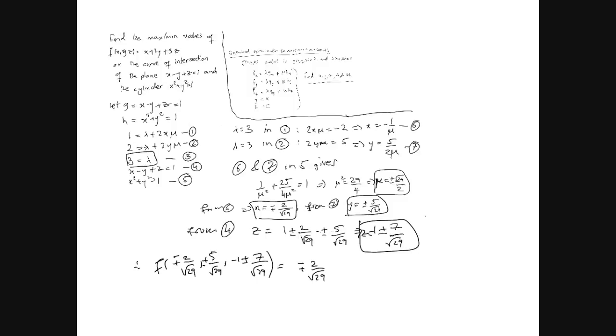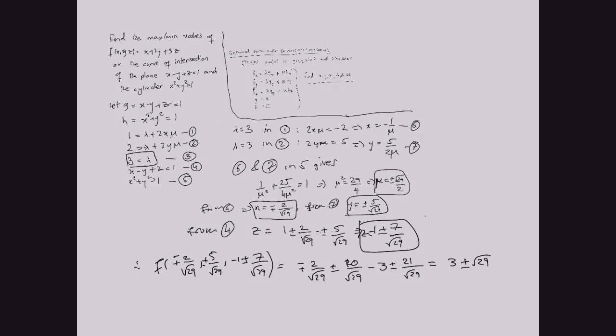Then plus twice, so plus minus twice means 10, 10 over root 29. Then we'll have 3 times these values, so it'll be minus 3 plus or minus 21 over square root 29. That's going to give us essentially 3 plus minus square root 29.